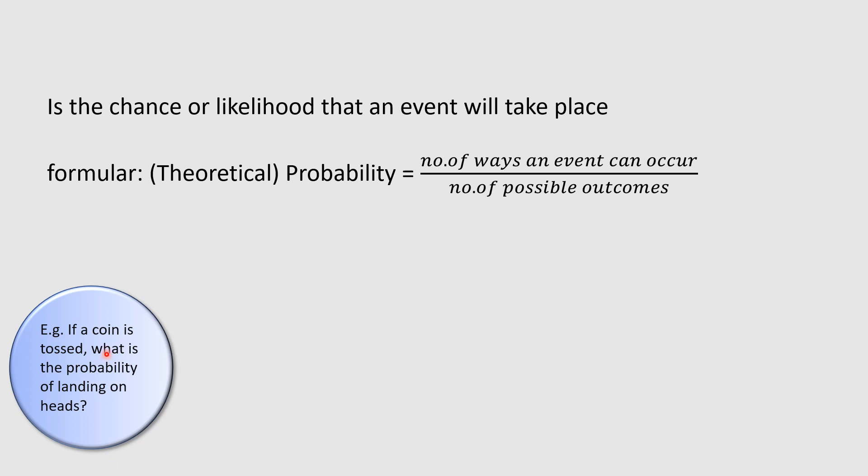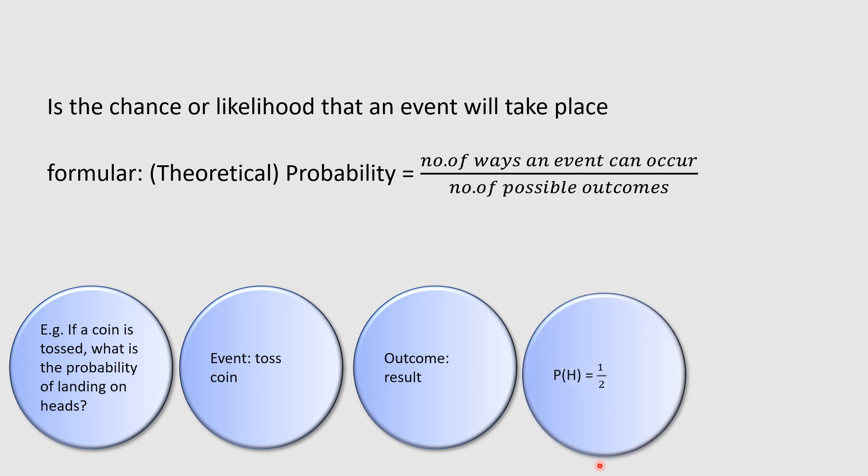For example, if a coin is tossed, what is the probability of landing on heads? The event is tossing the coin. The outcome is the result - the coin may land on heads or tails. So the probability of landing on heads equals one (we have just one head on that coin) divided by two (number of possible outcomes: heads or tails), which is one over two.